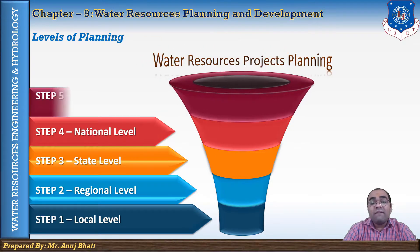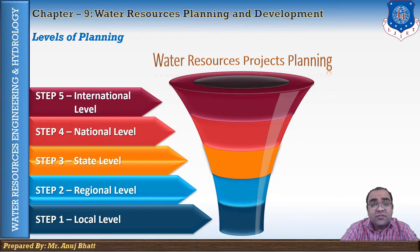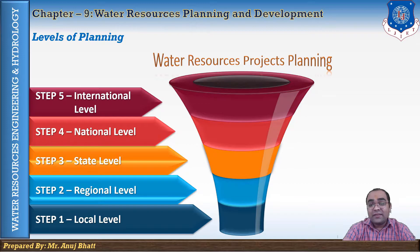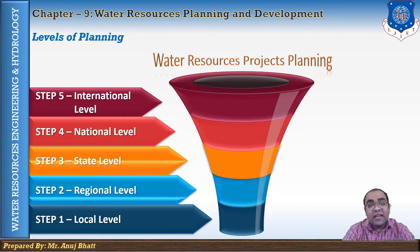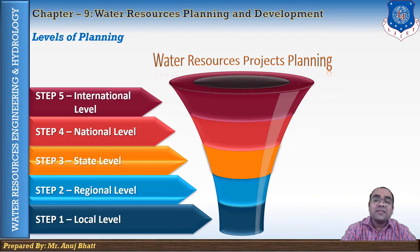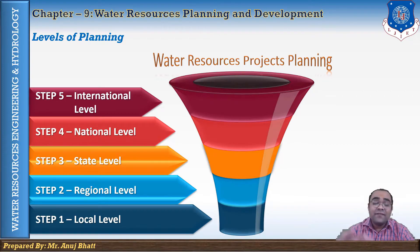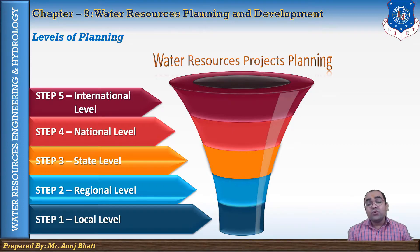The fifth and last level is the international level plan. When a river runs across neighboring nations and water resource planning is required at the international level — for example, river Koshi, which rises in Nepal and flows into Bihar in India, finally meeting the river Ganga. Since the origin of river Koshi is Nepal, this is considered an international level project. Similarly, river Sindhu rises in India, flows through Jammu and Kashmir, and then merges into Pakistan, so projects on river Sindhu are planned at the international level.